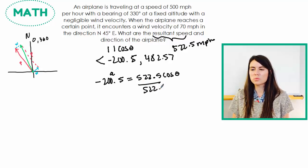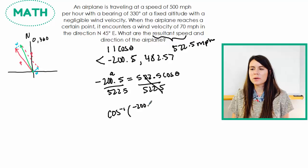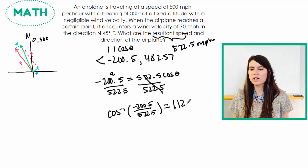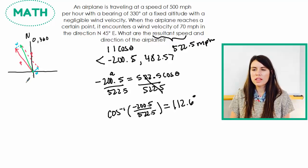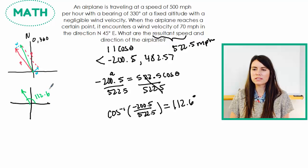So remember, inverse cosine, that function is awesome because it tells us angles. So my theta is going to be equal to 112.6 degrees. So that looks about right. If we look at this green vector here, it looks like it could be about 112.6 degrees. However, that's my unit circle measurement.